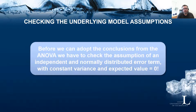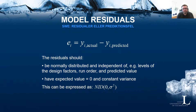The residuals, or prediction errors — in Swedish called 'residualer' — are calculated by taking the difference between the actual value and the predicted value. That is: actual minus predicted. This is oftentimes difficult to remember which comes first, so: actual minus predicted.